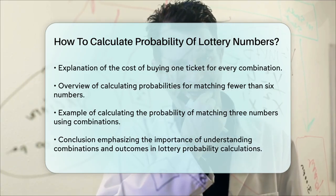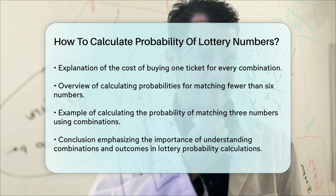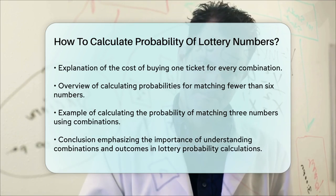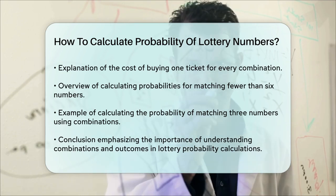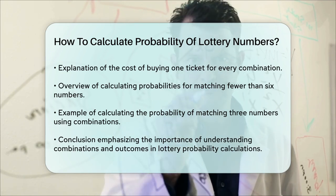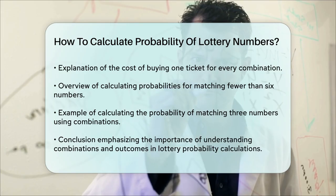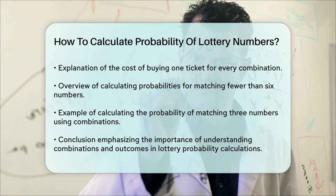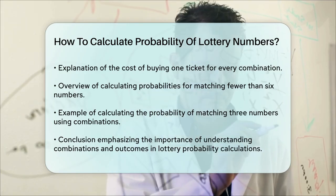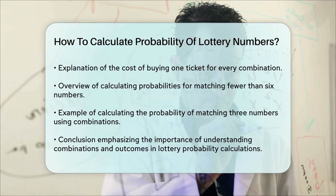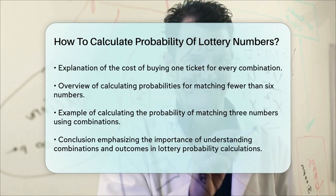So, there you have it — the step-by-step guide to calculating the probability of winning lottery numbers. It's all about understanding combinations and how many possible outcomes there are.